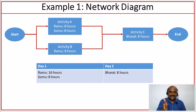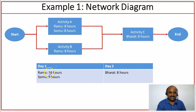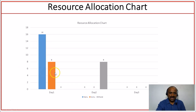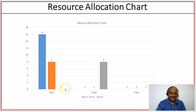If you look at the day-by-day workload, on day one, Ramu is loaded with 16 hours — he is planned to work eight hours on Activity A and eight hours on Activity B, so he is assigned 16 hours. Somu is planned for eight hours. On day two, Bharat is planned to work for eight hours. Our resource allocation chart shows Ramu is assigned 16 hours on day one across Activity A and Activity B. Somu is assigned eight hours and Bharat is assigned eight hours on day two. This is how the resource allocation chart looks, with days on the X axis and number of hours planned on the Y axis.